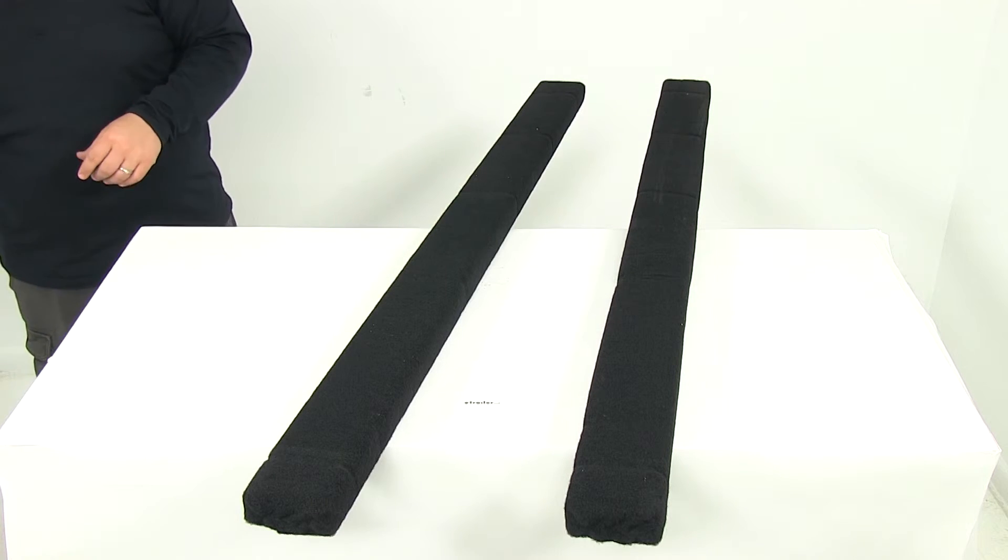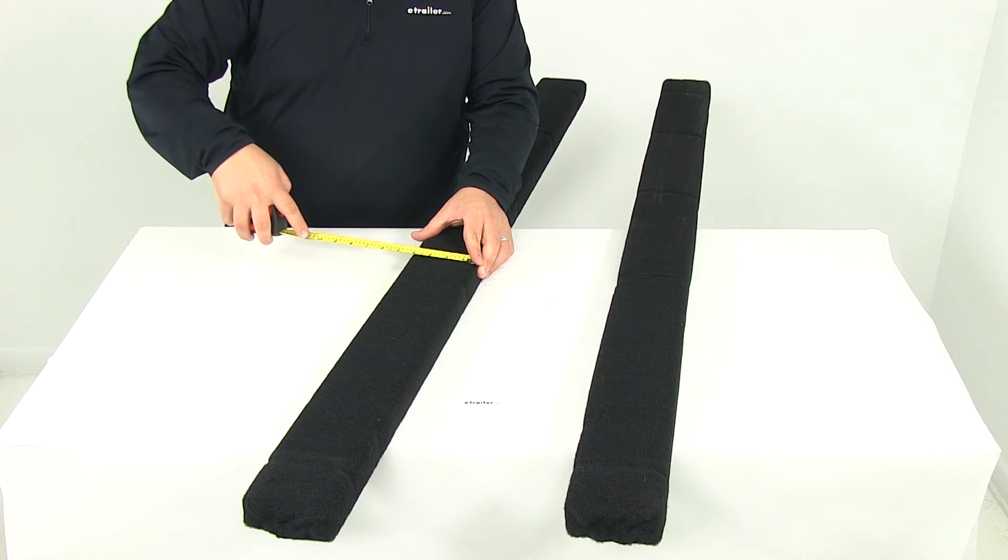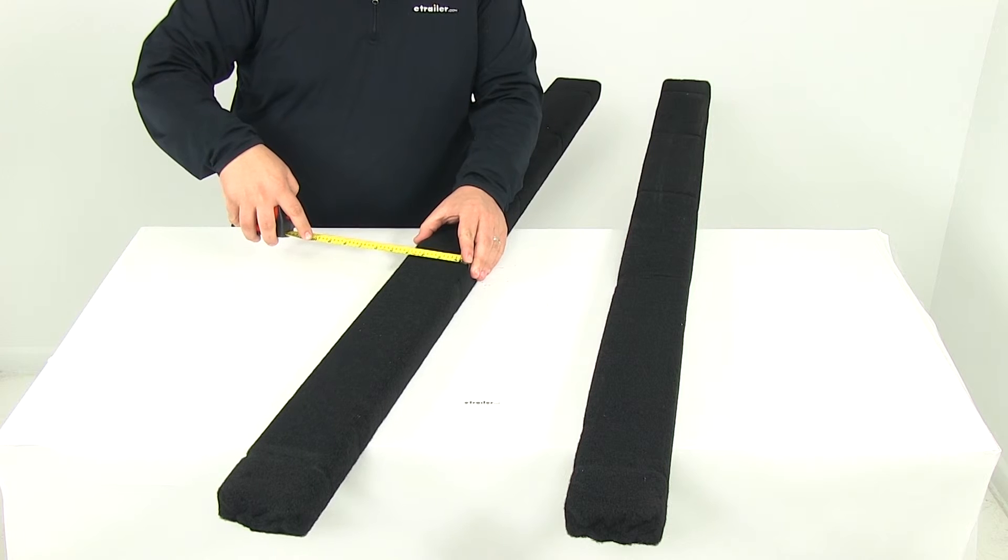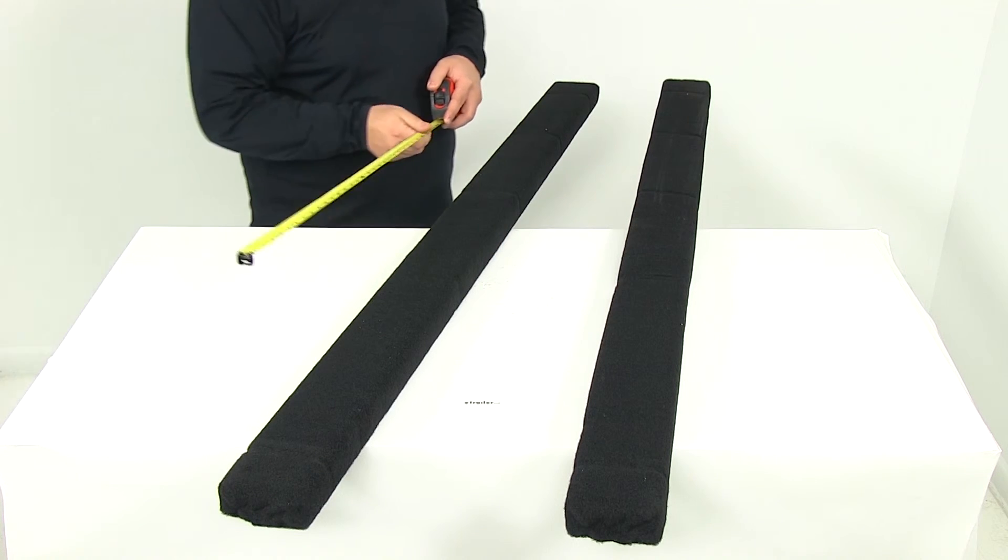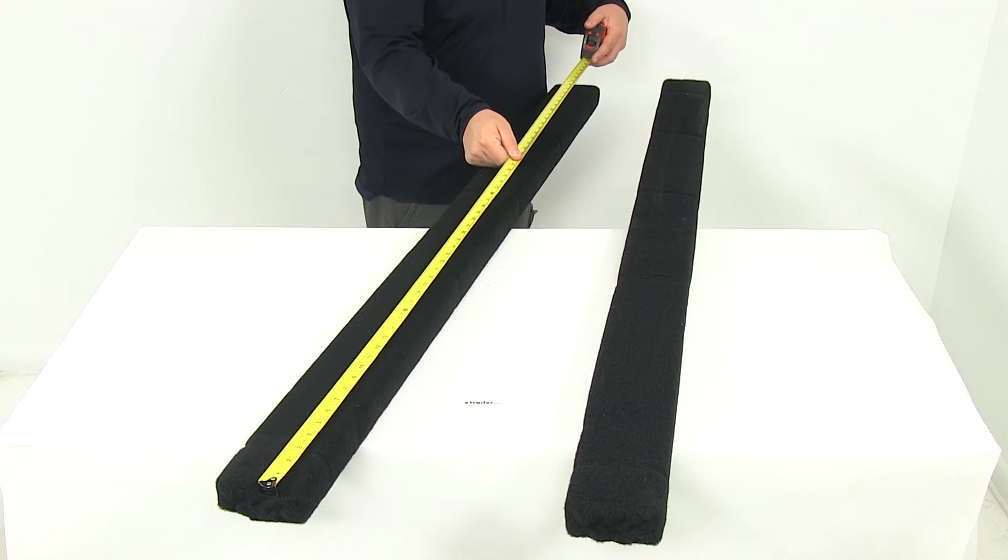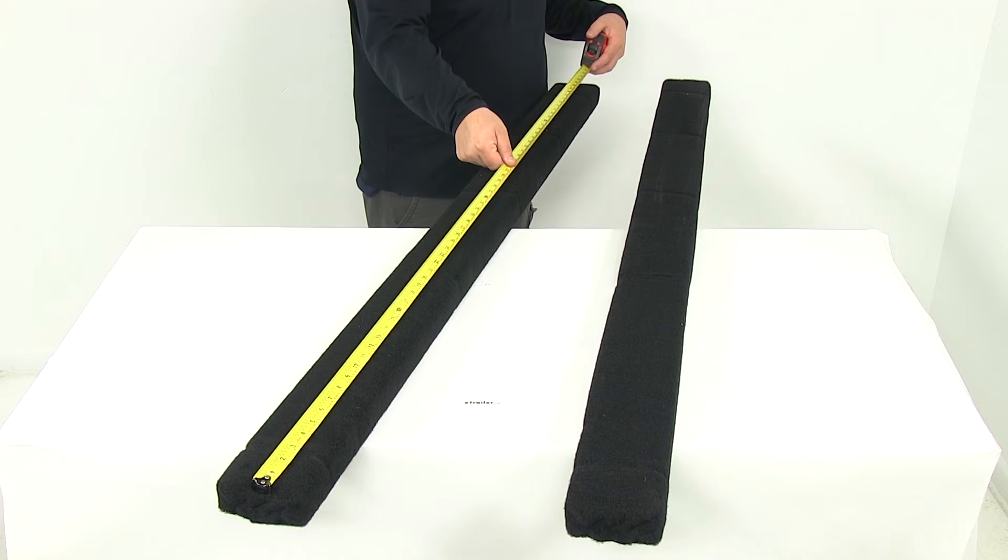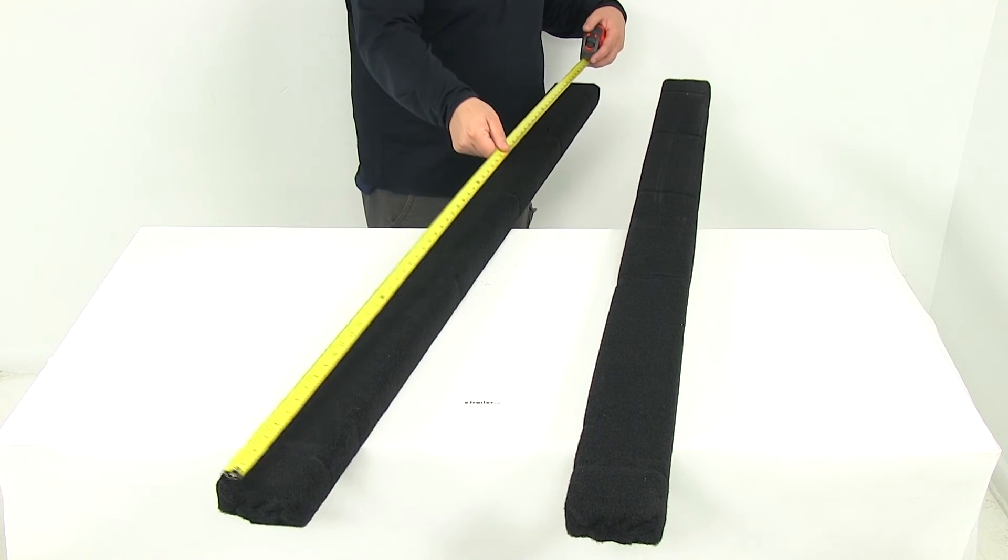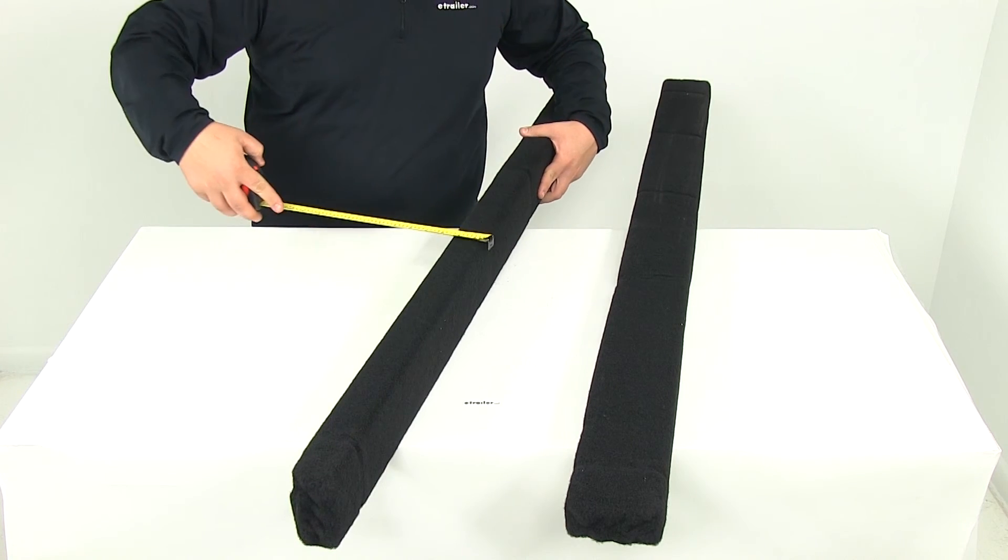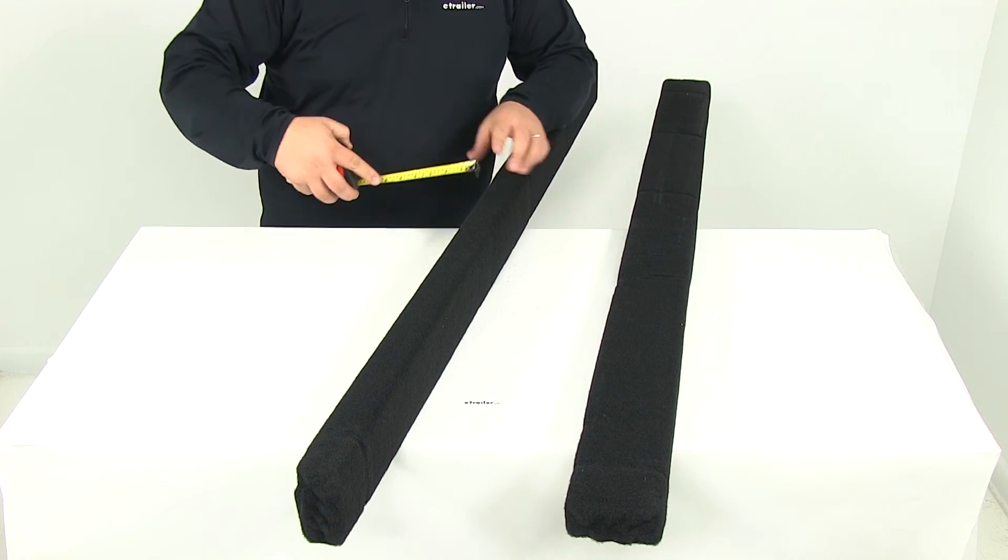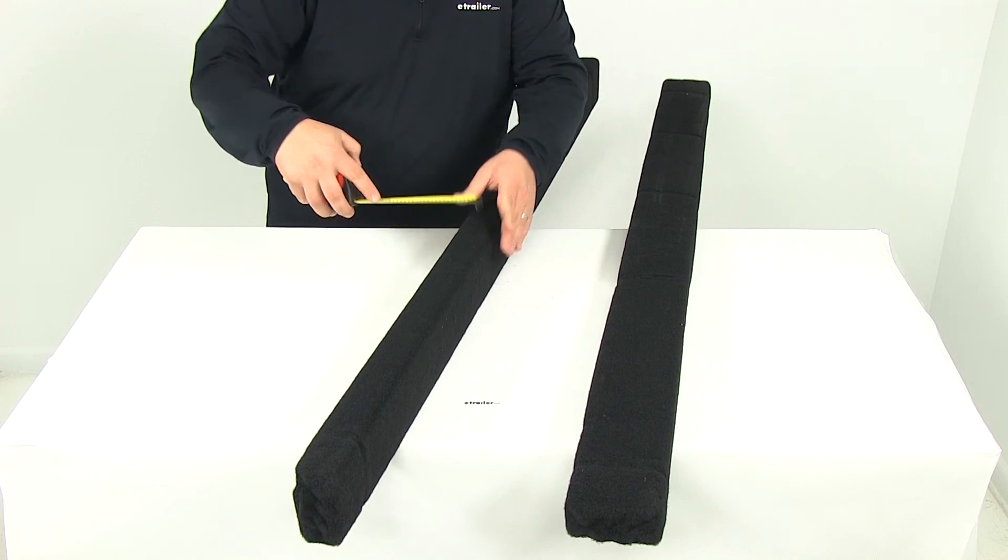And to finish up, I just want to go over the overall measurements. Measuring the height, if they were to stand upright, that's going to measure about three and three quarters of an inch. The overall length, measuring from edge to edge, that's going to give us a measurement of about sixty and a half inches. And then the overall width of the board, that's going to measure about one and three quarters of an inch.